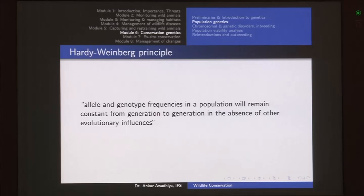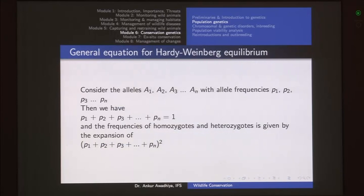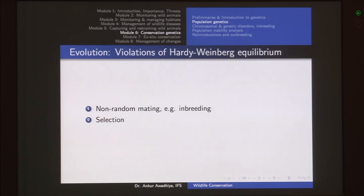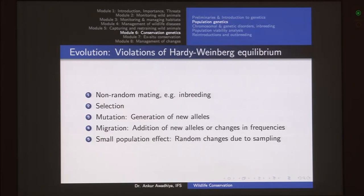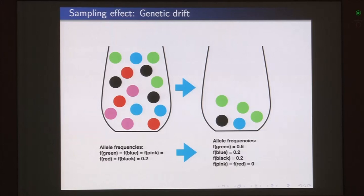The Hardy-Weinberg principle states that allele and genotypic frequencies in a population will remain constant from generation to generation in the absence of other evolutionary influences. Basically, if evolution is not taking place, allele and genotype frequencies remain constant. Evolution occurs if there is non-random mating, selection of mates, mutation, selection of individuals, migration, or a small population effect — as shown in the example of genetic drift, where taking only some individuals for the next generation changes the allele frequency in the gene pool.